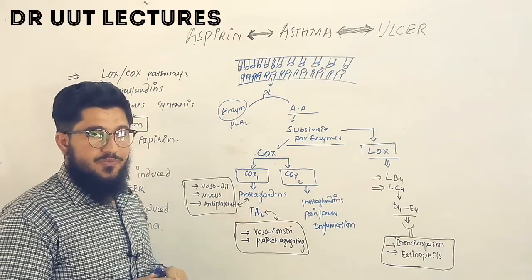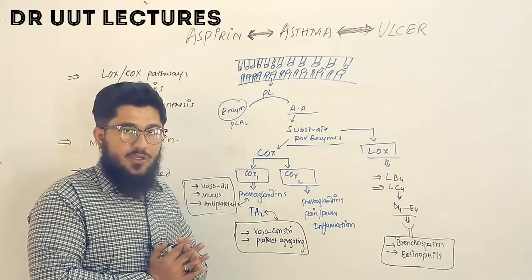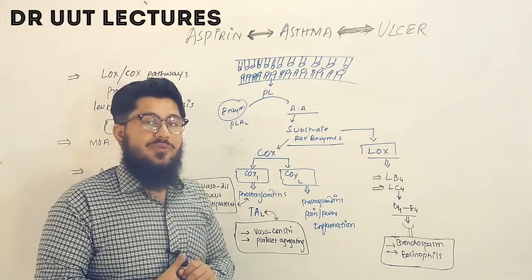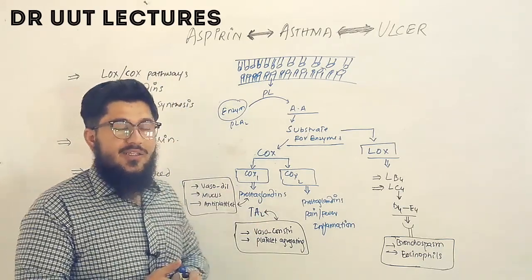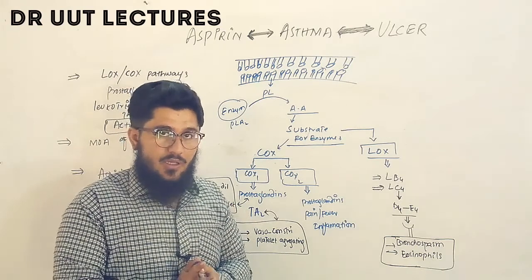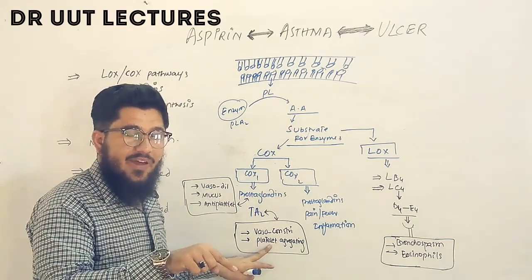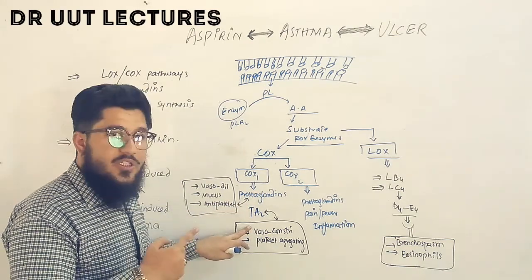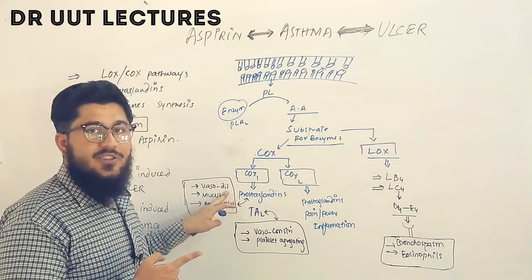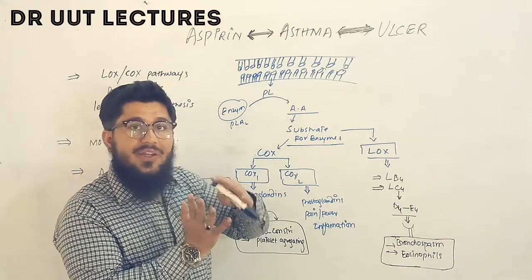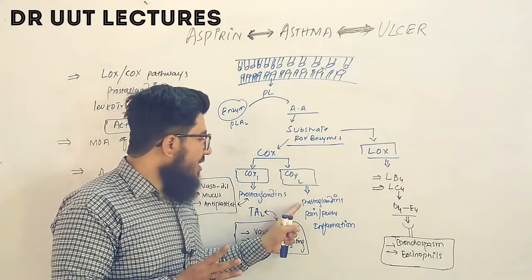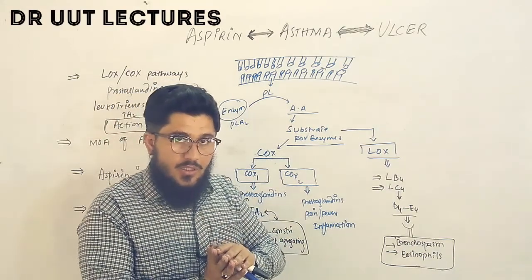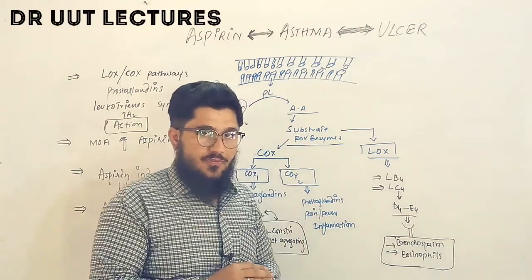Thromboxane A2, on the other hand, causes vasoconstriction and promotes platelet aggregation. So thromboxane A2 and prostaglandins together maintain homeostasis: thromboxane A2 causes vasoconstriction while prostaglandins cause vasodilation, and thromboxane A2 promotes platelet aggregation while prostaglandins act as anti-platelet agents. The prostaglandins produced by COX-2 are responsible for maintaining pain, fever, and inflammation.